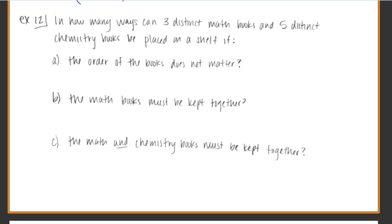Let's look at example number 12. How many ways can three distinct, there's a key, we have three different math books, so that means they must have different titles. One's algebra, one's calculus, one's trig or something.